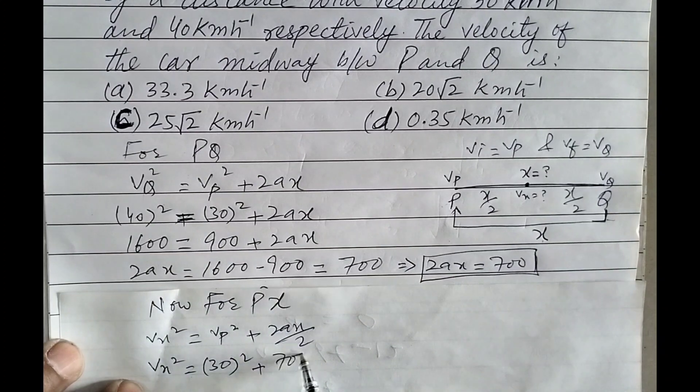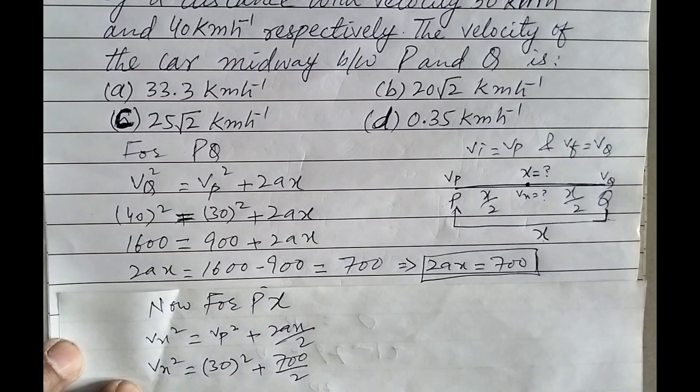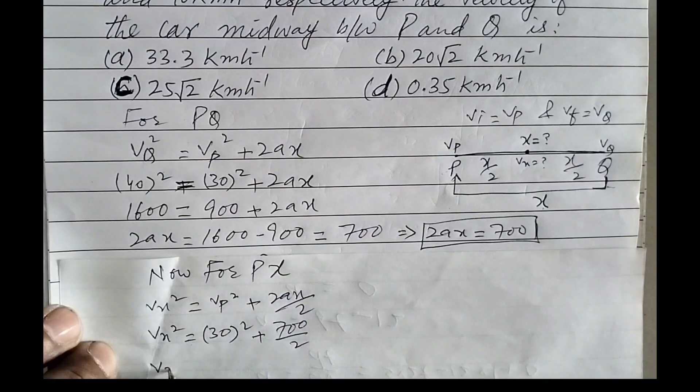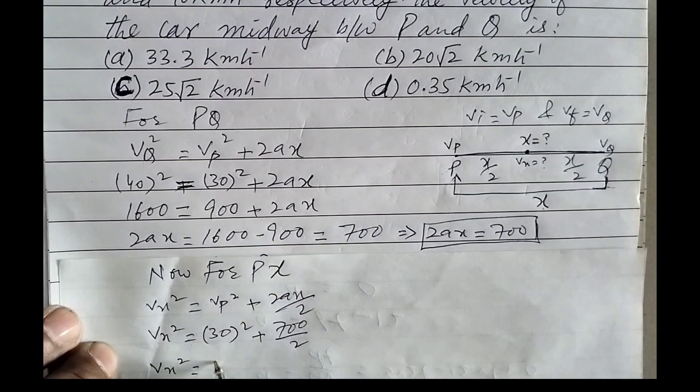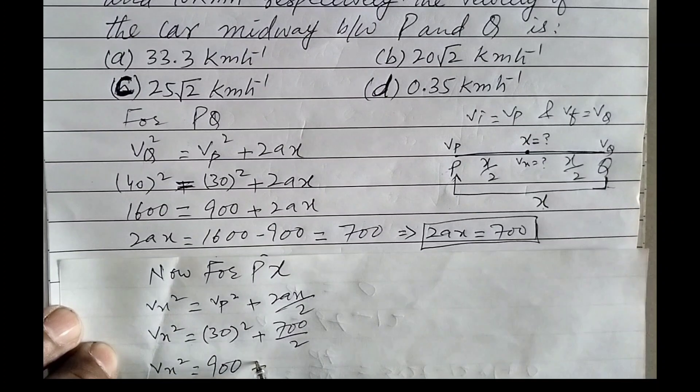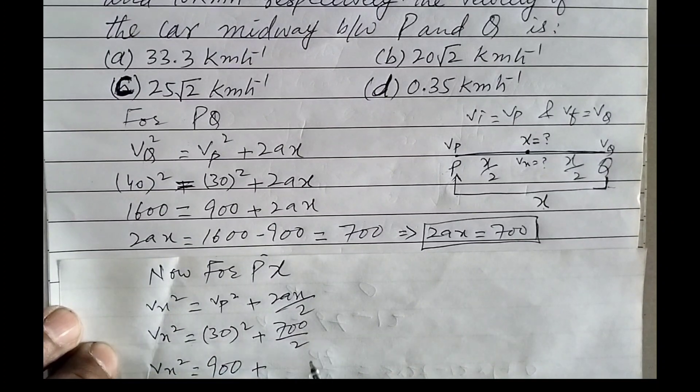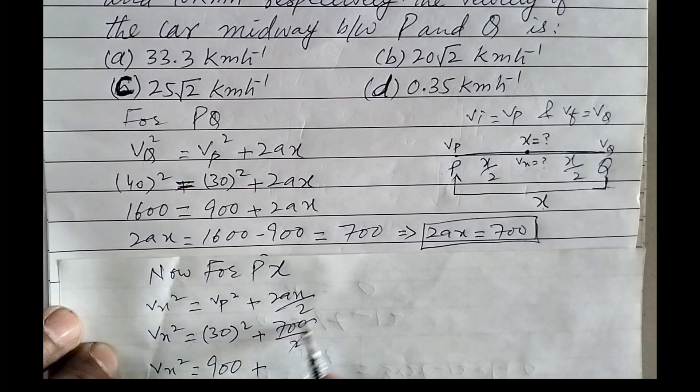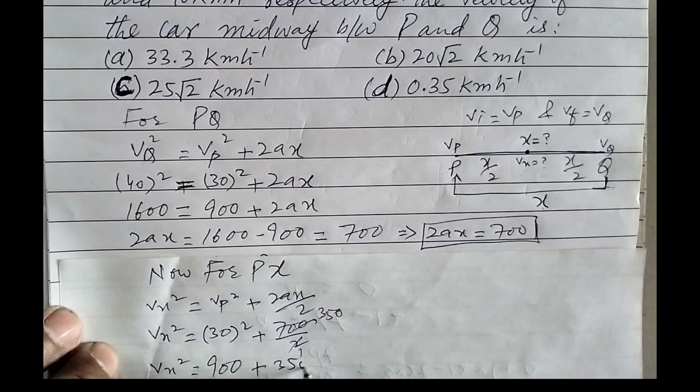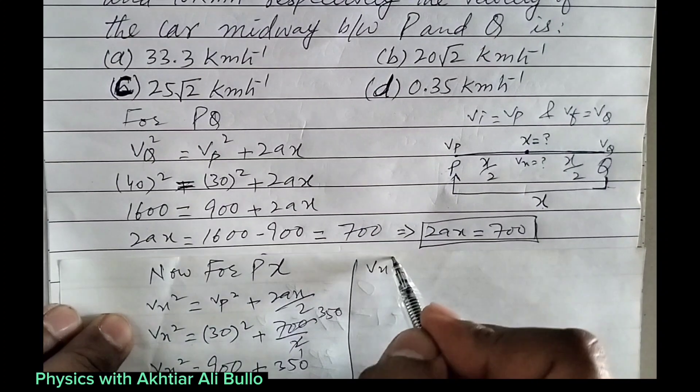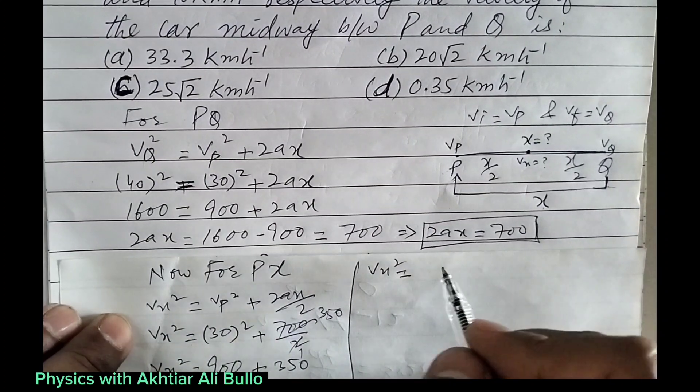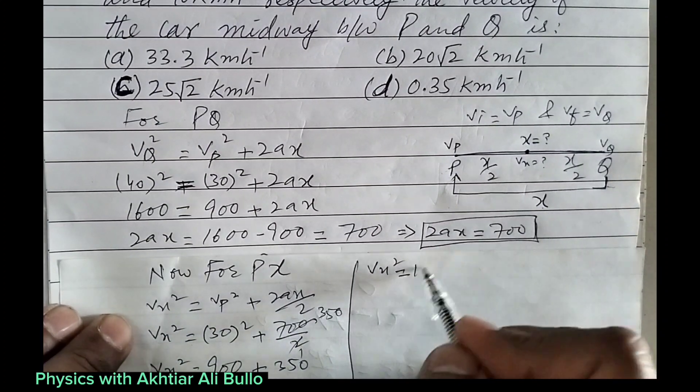So 700/2. Vx² = 30² which is 900 plus 700 divided by 2, so it will be 350. So Vx² will be equal to 1250.